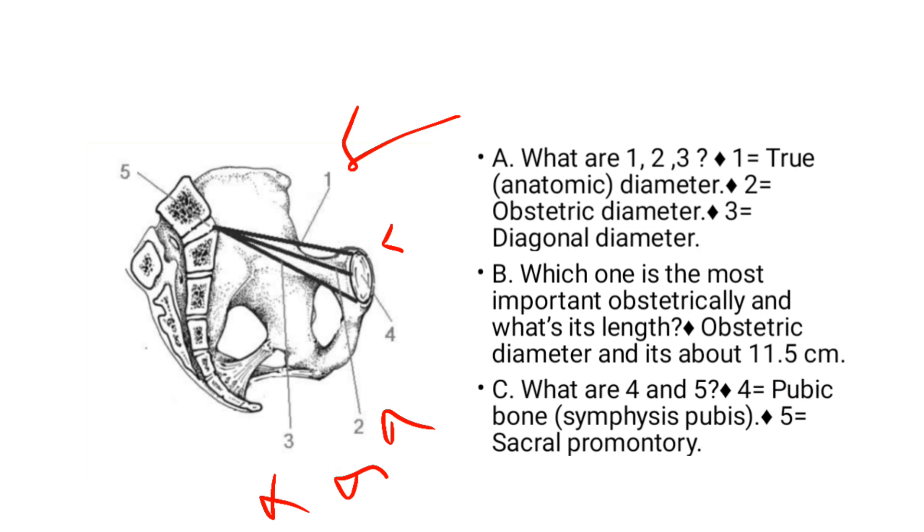Then what are 4 and 5? So 4 is the pubic bone or symphysis pubis, and 5 is the sacral promontory.